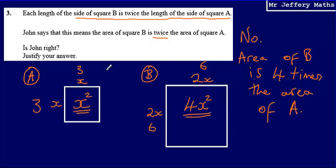So final answer, having shown some work in our answer, would be no, the area of B is 4 times the area of A.